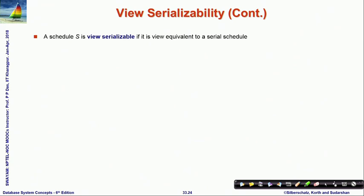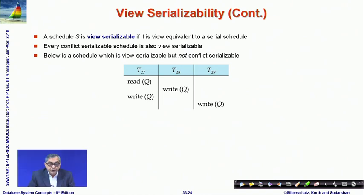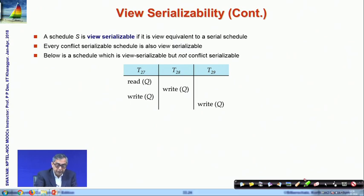A schedule is view serializable if it is view equivalent to a serial schedule — analogous to conflict serializability being conflict equivalent to a serial schedule. Every conflict serializable schedule is also view serializable, but the reverse is not true. Here is a schedule which is view serializable but not conflict serializable — you cannot move the writes to make it conflict equivalent to any serial schedule.